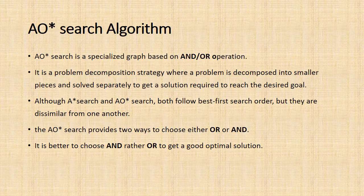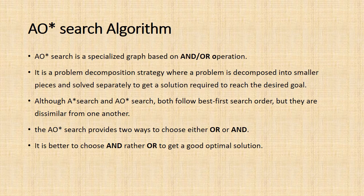AO* search is a specialized graph based on AND/OR operation. It is a problem decomposition strategy where a problem is decomposed into smaller pieces and solved separately to get a solution required to reach the desired goal. Although A* search and AO* search both follow the best-first search order, but they are dissimilar from one another. The AO* search provides two ways to choose either OR or AND. It is better to choose AND rather OR to get a good optimal solution.